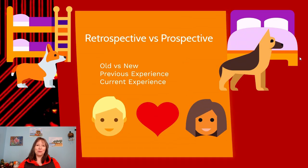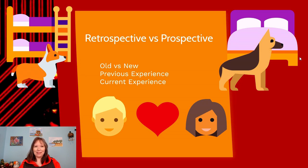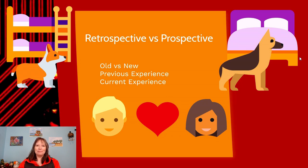A final differentiation is retrospective versus prospective memory. Retrospective refers to old things — our previous experiences. Can you remember your childhood bedroom, your childhood pet, your childhood best friend? Prospective memory is about the present — do you know what your current bedroom looks like, the name of your current pet, your current best friend? Retrospective is our ability to remember things as they were; prospective memory is about remembering things as they are now. We'll be coming back to these concepts a bit later.